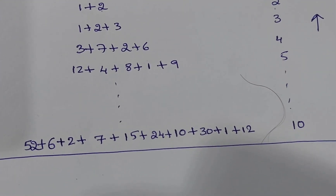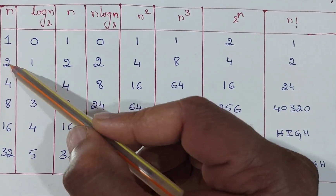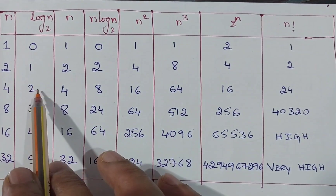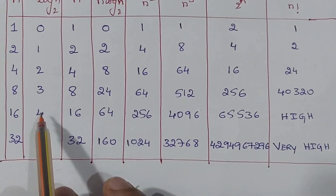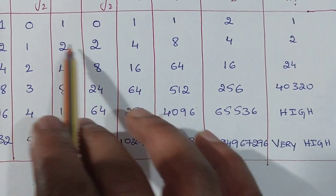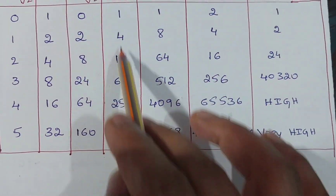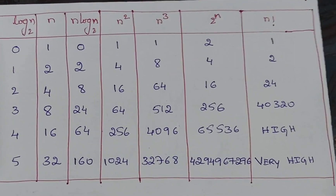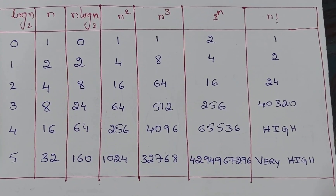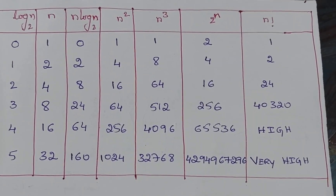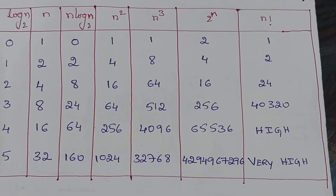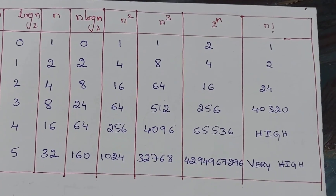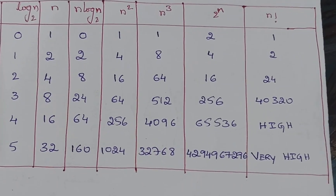The order of growth of these functions can be represented with a table. Taking n values of 1, 2, 4, 8, 16, 32, we can compute log n: log 1 is 0, log 2 is 1, log 4 is 2, log 8 is 3, log 16 is 4, log 32 is 5. Similarly we can compute n, n log n, n², n³, 2ⁿ, and n factorial. From this table, we see that n factorial is much slower, while algorithms taking n or log n or n log n time are much faster. Algorithms consuming time in terms of exponential or factorial are the slowest.